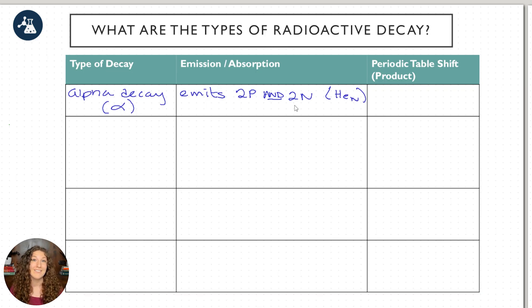Alpha decay is denoted by the Greek letter alpha and it's when a nucleus emits two protons and two neutrons, also known as the helium nucleus or the alpha particle. So all three of these things are synonyms: two protons and two neutrons, the helium nucleus, and the alpha particle. Whatever the question says, they're referring to alpha decay.